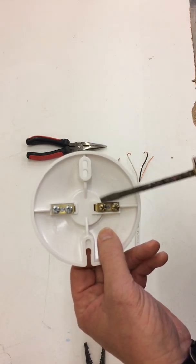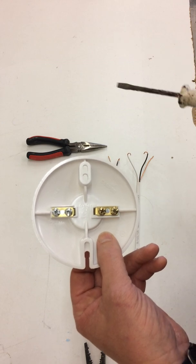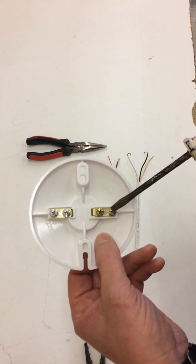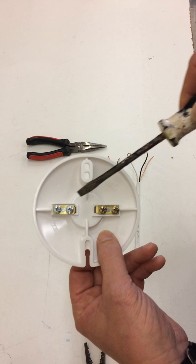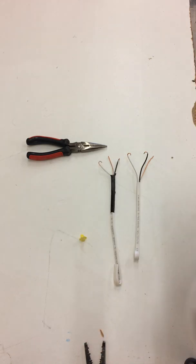We have bronze screws and we have silver screws. The bronze screws are where you attach your hot wires, your silver screws are where you attach your neutral wires.